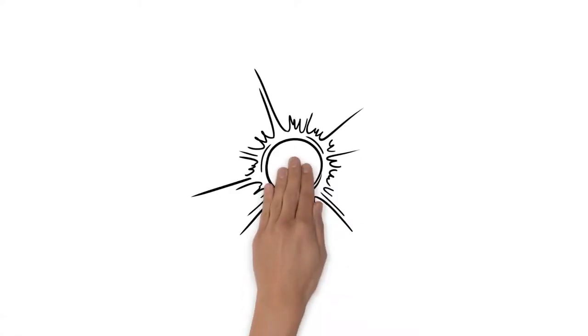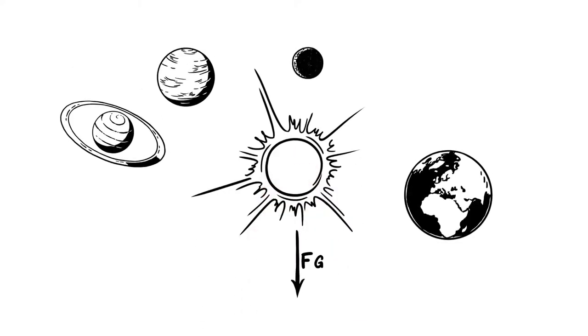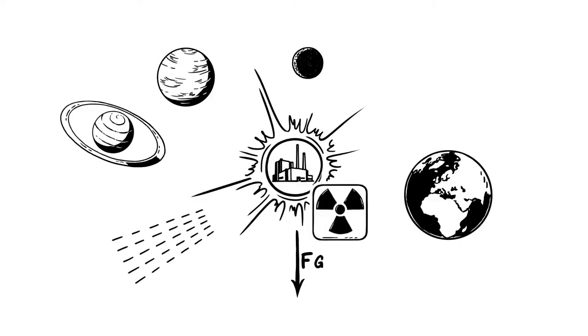But the sun is not only the gravitational center of our solar system. It is also a source of energy. Fueled by nuclear fusion, the sun emits light and a steady stream of particles, the solar wind.